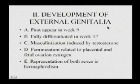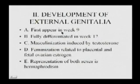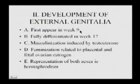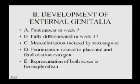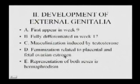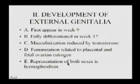Development of the external genitalia begins around week nine in the fetal stage and is fully differentiated by week twelve. The genital tubercle undergoes active growth and differentiation at week nine. Masculinization is induced by testosterone, meaning that female development is the default, driven by placental and fetal ovarian estrogen. Testosterone is essential to trigger masculinization; without it, female development proceeds. Representation of both sexes is termed hermaphroditism.